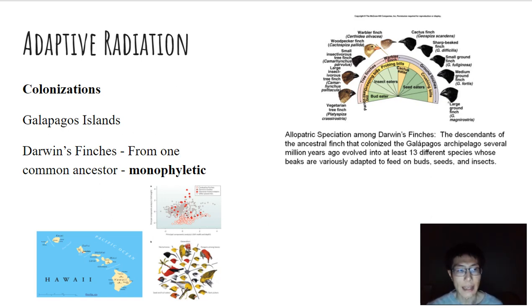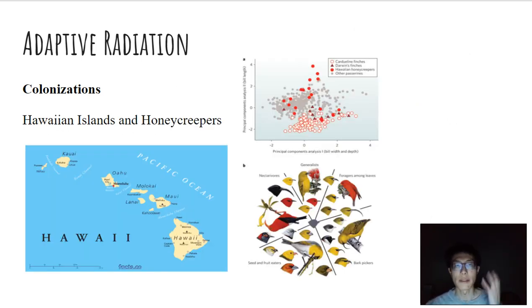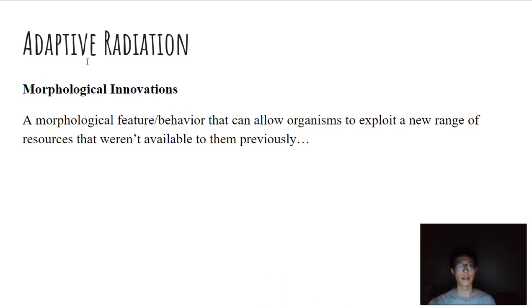So what's really fascinating is that when you have these adaptive radiations, there can be different triggering events. So we have extinctions, we now have colonizations to a new habitat, as in the case of the Darwin's finches and the Hawaiian honeycreepers. We also have one more thing, and that is morphological innovation.